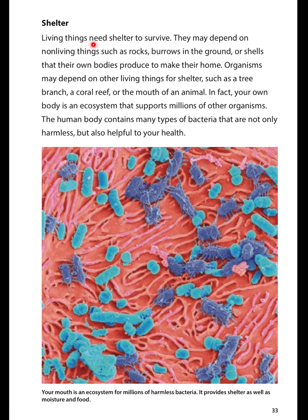Shelter. Living things need shelter to survive. They may depend on non-living things such as rocks, burrows in the ground, or shells that their own bodies produce to make their home. Organisms may depend on other living things for shelter, such as a tree branch, a coral reef, or the mouth of an animal. In fact, your own body is an ecosystem that supports millions of other organisms. The human body contains many types of bacteria that are not only harmless, but also helpful to your health. Your mouth is an ecosystem for millions of harmless bacteria — it provides shelter as well as moisture and food.